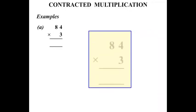In this lesson we do some work on contracted multiplication. Examples. Part A we have 84 times 3. Let's bring some working out space and write it down a little bit bigger.